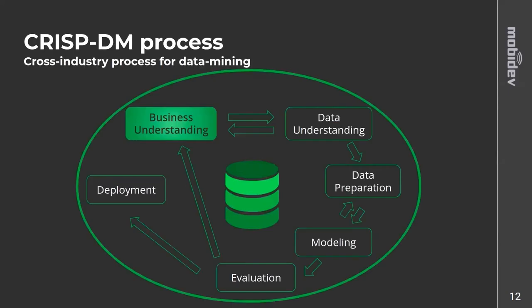I want to show you a diagram — the CRISP-DM process. This describes how a data science project works. The main idea is to understand that a data science project is not a sequential development project like building a mobile application where one step follows another. I highly recommend that newcomers invest five to ten minutes describing this process to the client, so you're all on the same page from the start.